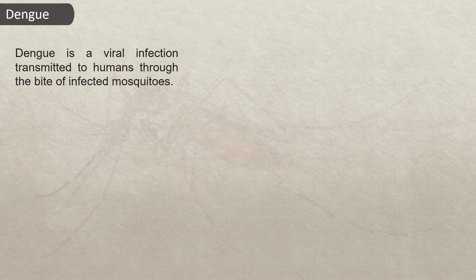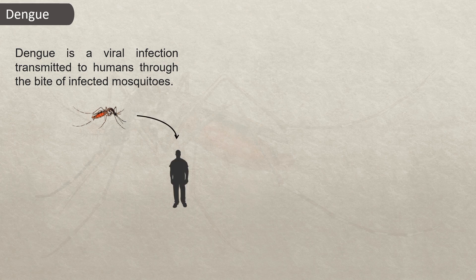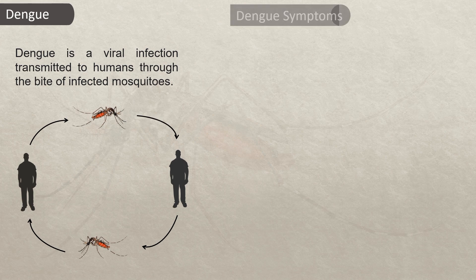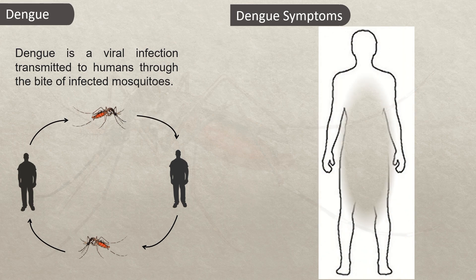Let's see the cycle of the disease. If this is our infected mosquito and it bites a human, the human will be infected. Then if a free dengue mosquito bites an infected person, the mosquito will be infected. So the cycle continues in this way.